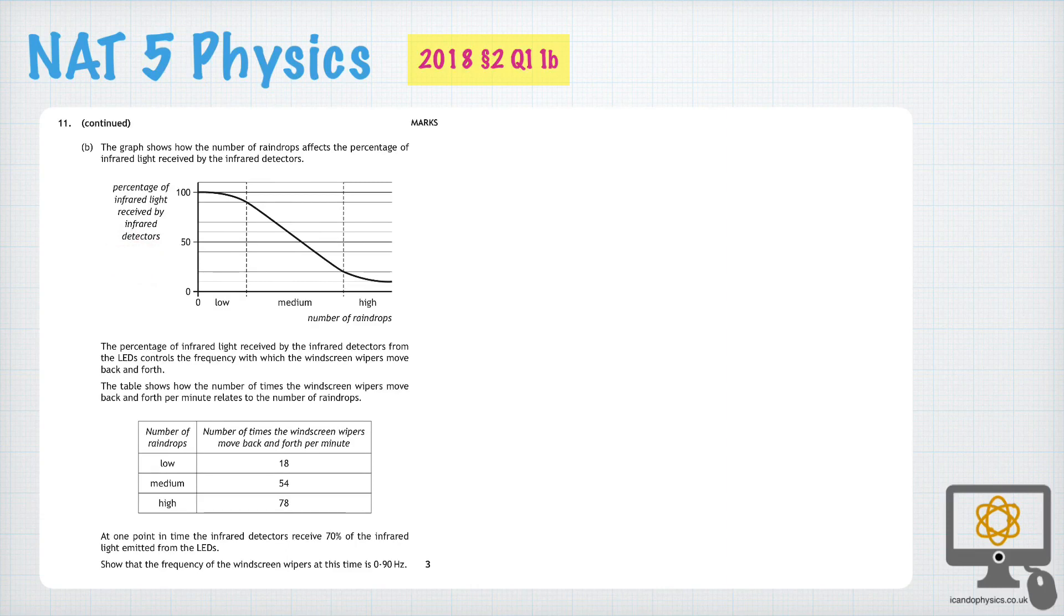The second one shows how the number of raindrops affects how frequently the wipers move back and forth, how many times they move back and forth in one minute.